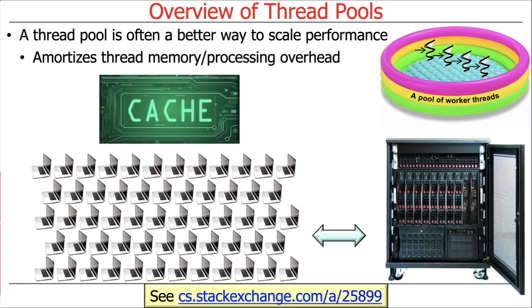Why is a thread pool a win? One thing it does is amortize the creation of threads and the overhead of additional memory and processing. We create threads ahead of time — though there's some variance — and therefore the creation time for threads, which is fairly expensive, is amortized over all the subsequent uses.